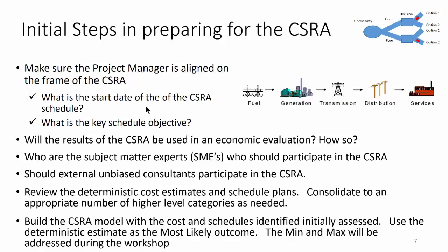That may determine what kind of inputs we're going to need to model the outcome of the CSRA. We need to know who are the subject matter experts and who should participate. Should we have external unbiased consultants participate? Review the deterministic cost estimates and schedule plans, then consolidate those into an appropriate number of higher-level categories — typically 50 to 100. Early on in a project you may only have a few. Build the CSRA model with the costs and schedules initially assessed, using the deterministic estimates as the most likely outcome or P50. The minimum and max, or P10–P90, will be addressed during the workshop.